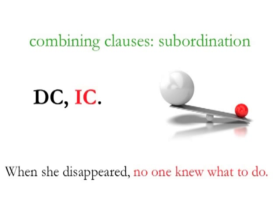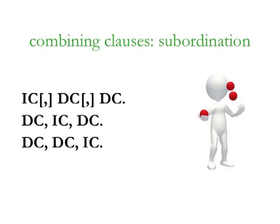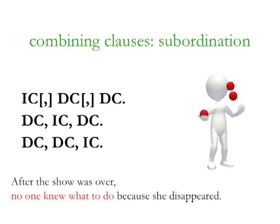Let's briefly look at the other way of going — subordination — though I'll explain it in greater length in the next lesson. Here the clauses are not balanced. The independent clause has ownership over the sentence, and the dependent clauses have to lean on it. For example: 'When she disappeared, no one knew what to do.' 'No one knew what to do' can stand alone. 'When she disappeared' cannot, because it begins with the subordinator 'when.' The beauty of subordination is that it allows for all kinds of combinations, such as: 'After the show was over, no one knew what to do because she disappeared.' Here two dependent clauses — one in front and one in back — lean on the central independent clause.